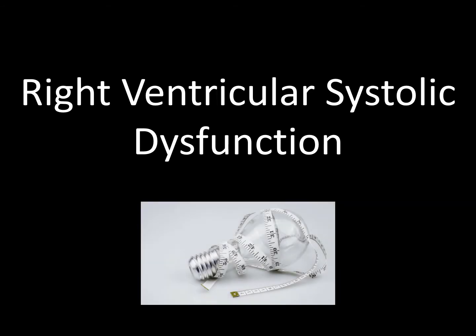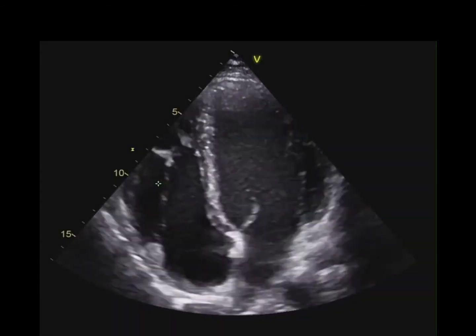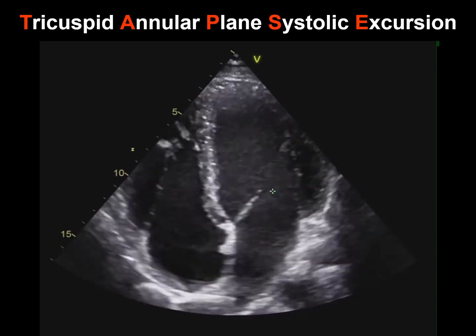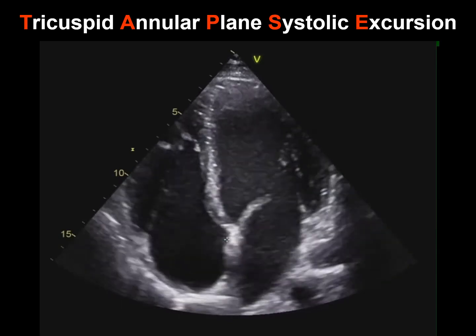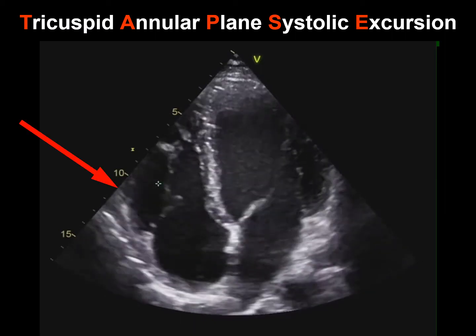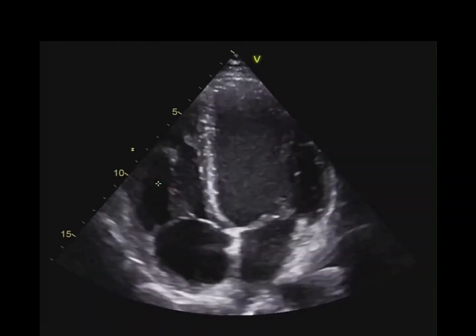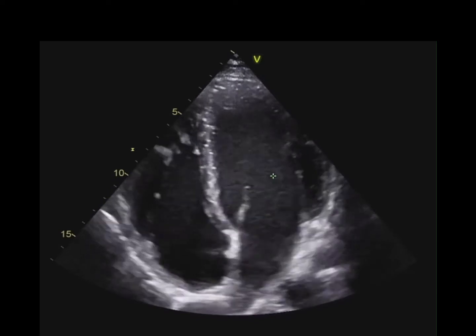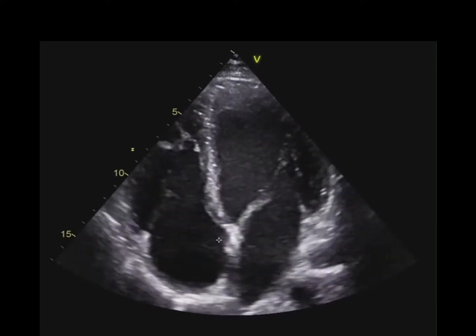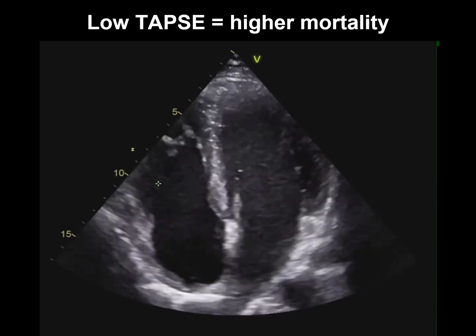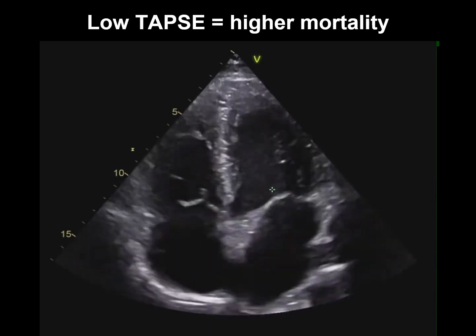So that brings us to right ventricular systolic dysfunction. This is why massive and submassive PEs are so deadly — because they create an acute right-sided heart failure that, if left untreated, will progress to hemodynamic collapse. That's where TAPSE comes into play. TAPSE stands for Tricuspid Annular Plane Systolic Excursion and is measured using M-mode where the tricuspid leaflet connects to the right ventricular free wall. Think of this as a measure of how much the heart moves up and down. A healthy heart muscle will move up and down a lot, giving a higher number. A strained heart moves less, resulting in a lower TAPSE, which has been independently linked to a higher mortality in PE.